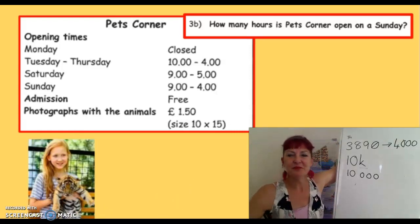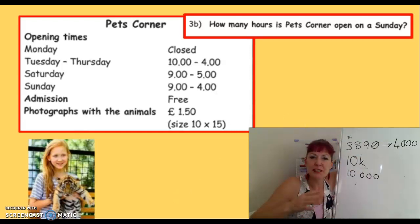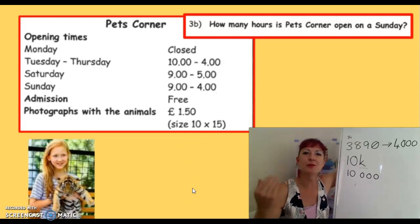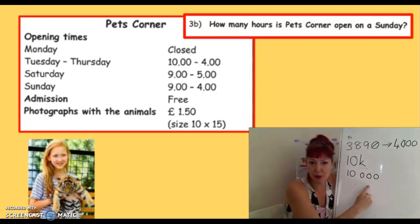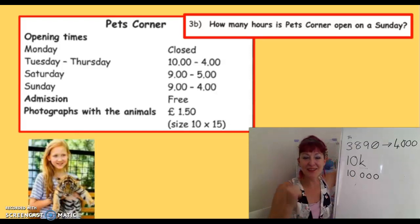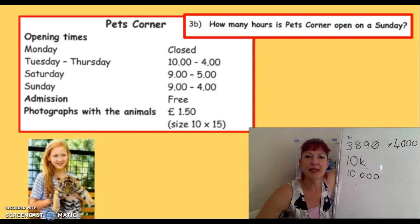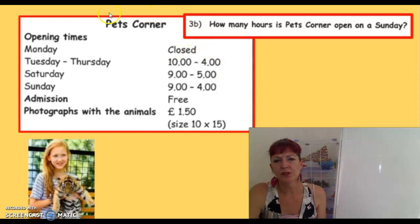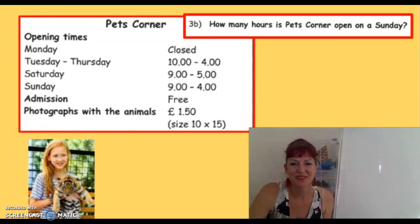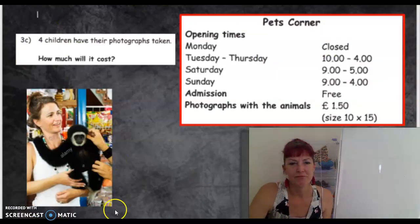Do you know that there are 3,890 tigers approximately living in the world? But an interesting fact is they reckon there's around 10,000 tigers actually living in captivity in America. Isn't that amazing? Tigers being kept as pets. But what shape is this? Rectangle — I hope you said that.